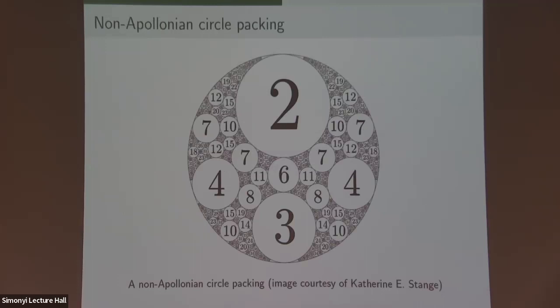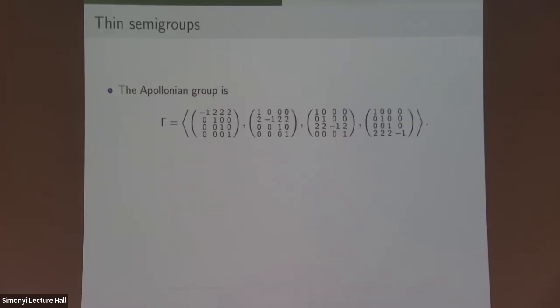For the last bit, I want to focus on future directions. Here's a picture of a non-Apollonian circle packing — very similar, but curvatures appear in rectangles and are not mutually tangent to each other. You can ask the question for any of these wide variety of generalizations: is there another reciprocity obstruction that happens? I think that's a very interesting question. Another direction I'll discuss briefly is in terms of thin semi-groups.